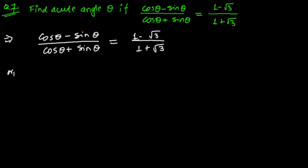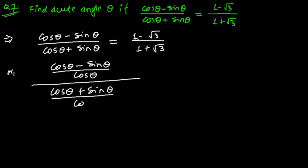So what can we do now? Let me just divide this numerator and this denominator both by cos θ. What will happen? Let's see. Both sides I am dividing, that's why I can do this.